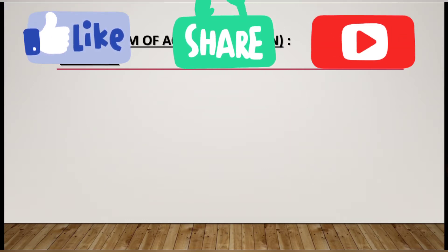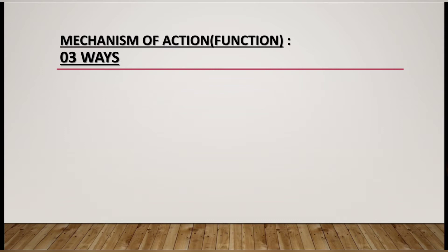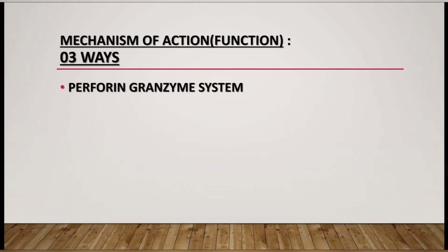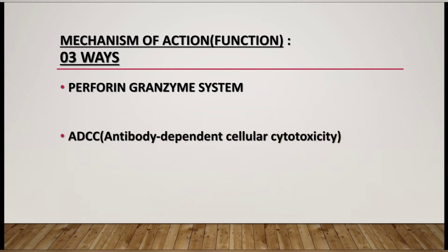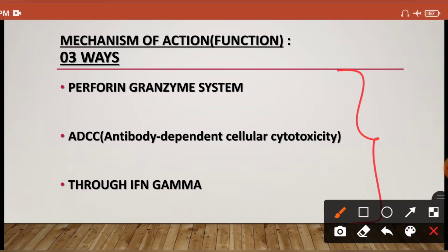How do natural killer cells function in terms of eliminating virus-infected cells and cancer cells? There are three ways the natural killer cell acts: first, by the perforin-granzyme system; second, by ADCC — antibody-dependent cellular cytotoxicity; or third, by interferon gamma production. By these three ways they eliminate the offending agent.